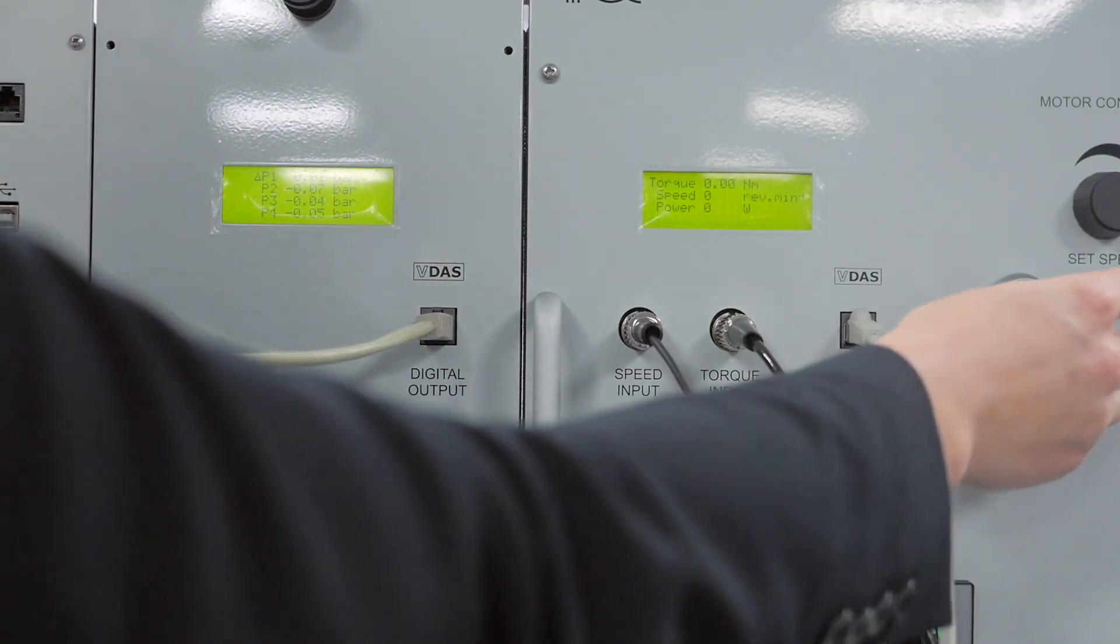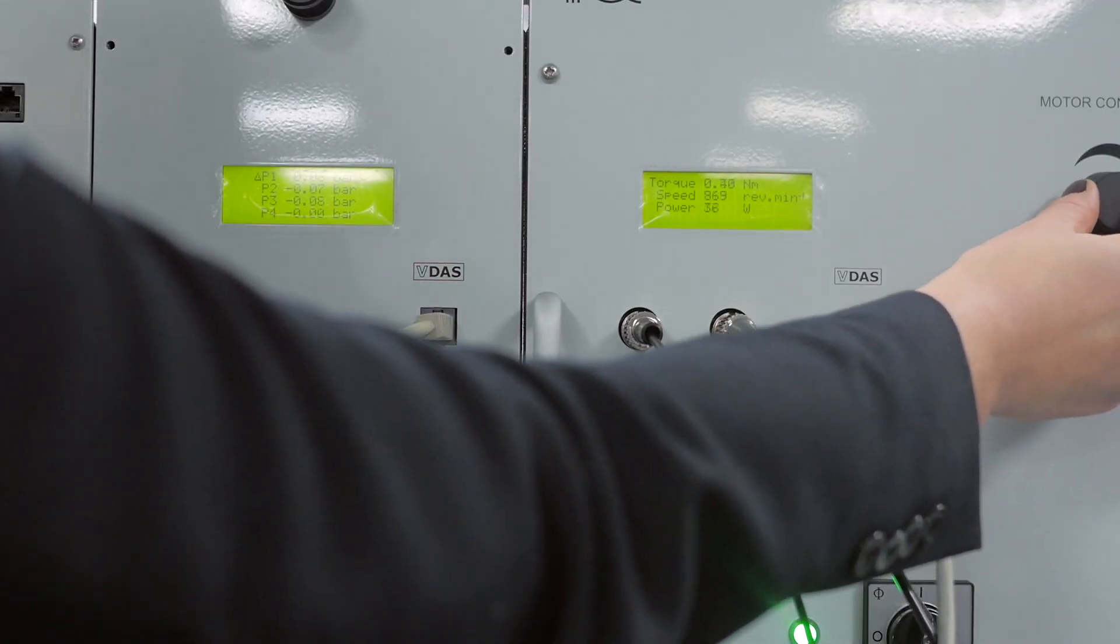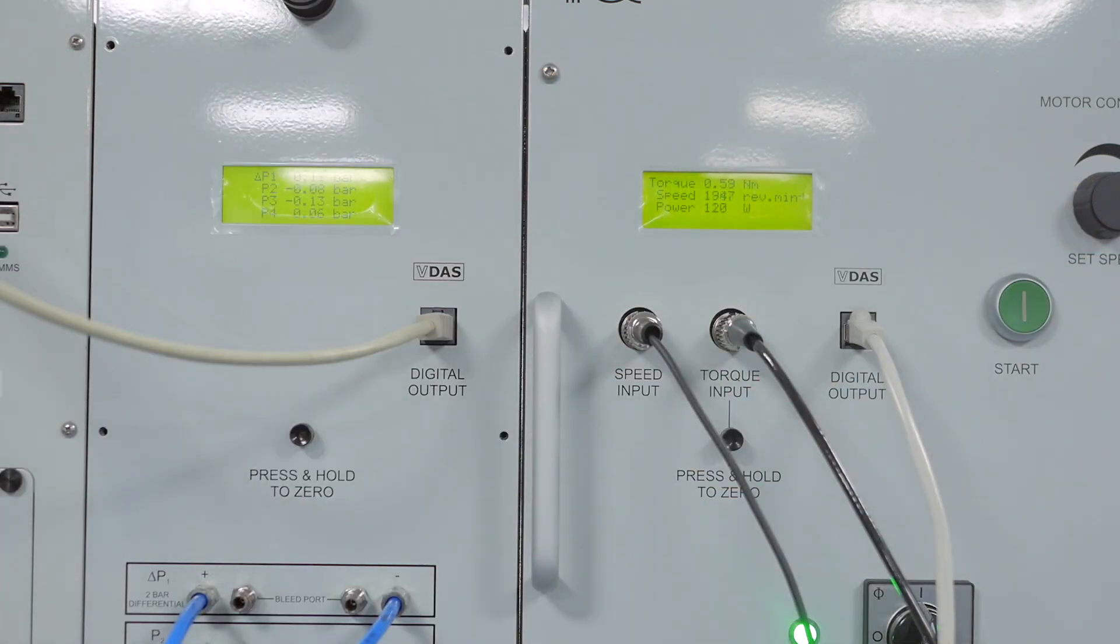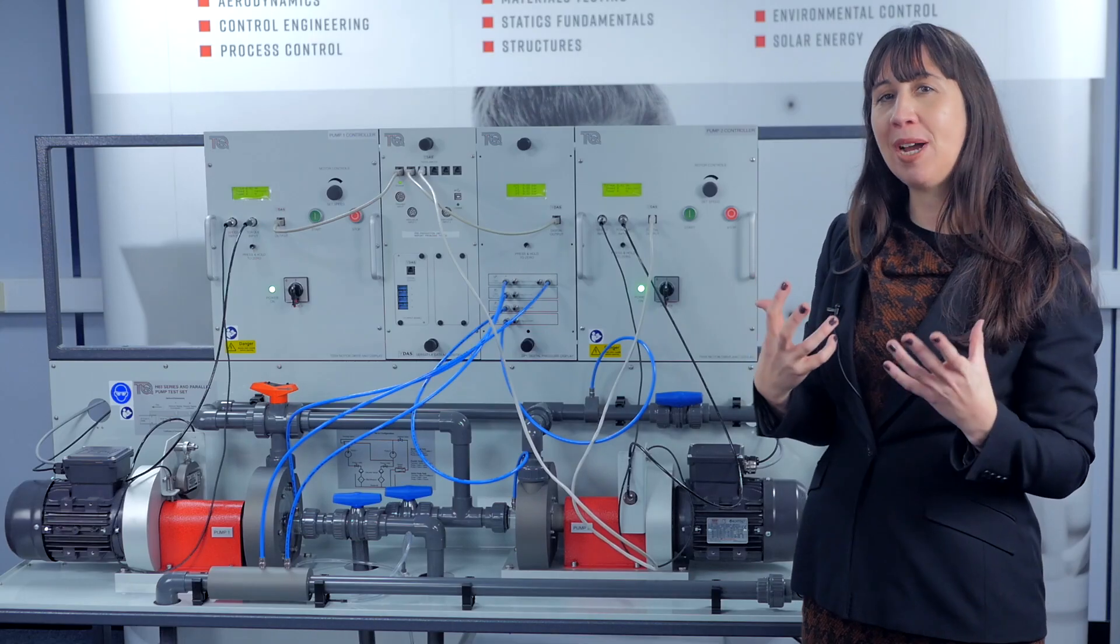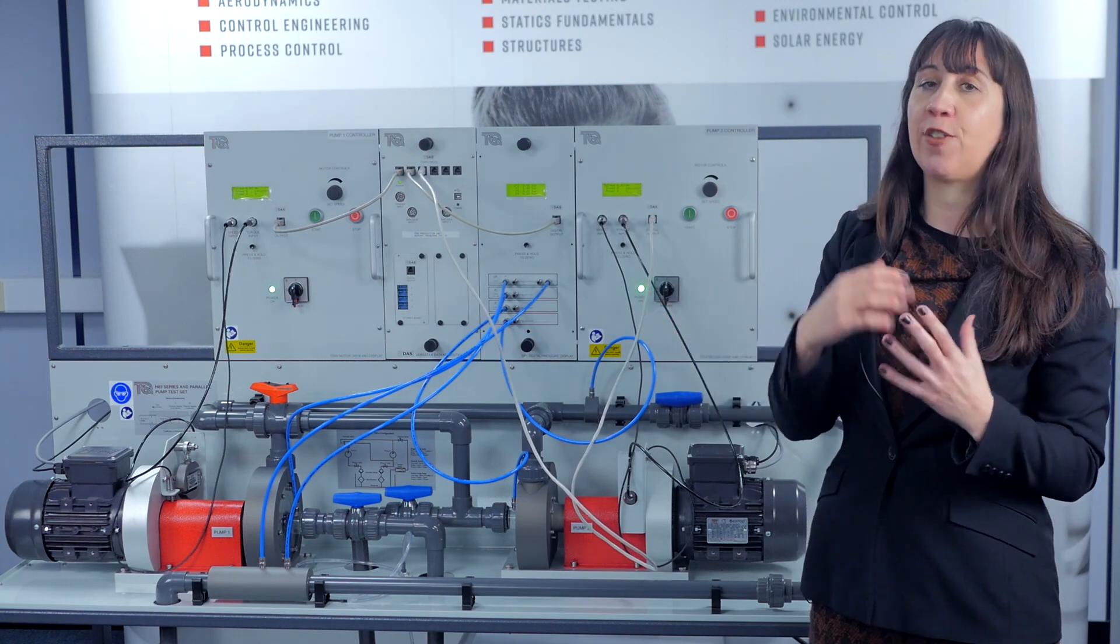A display for each motor drive shows speed and torque and automatically calculates and displays true shaft power. The differential pressure across the venturi gives flow rate.